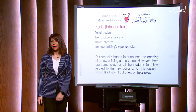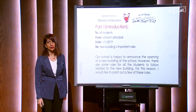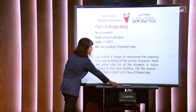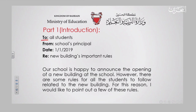This is the proper structure of writing a memo. You address the receiver, write the name of the sender which is you, specify the date, and include 'Re' or 'Subject.' So: To: All Students; From: School's Principal; Date: [any date]; Subject/Re: New Building — Important Rules.